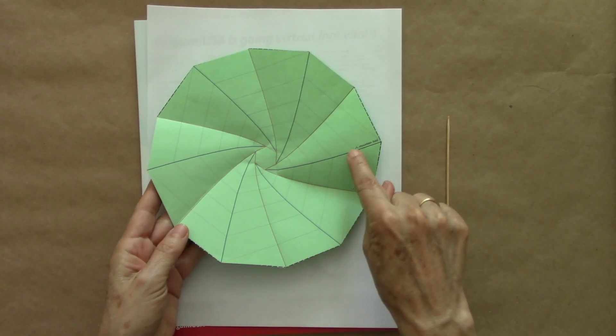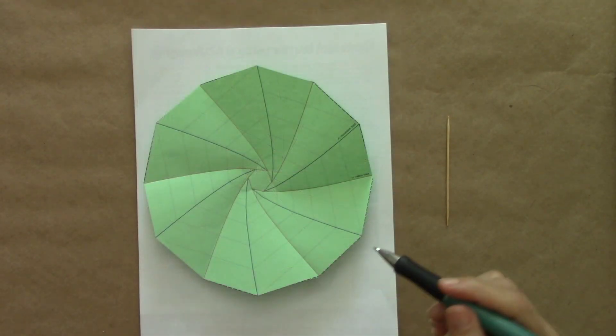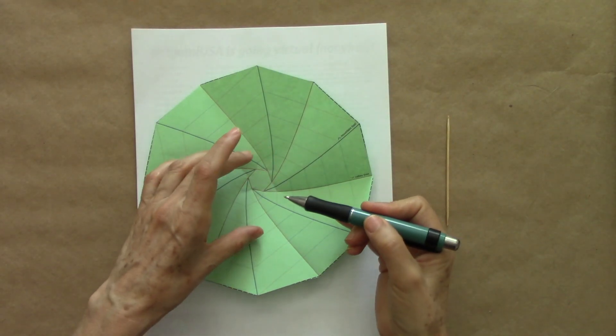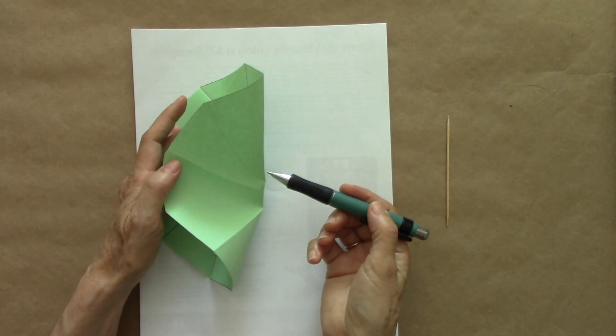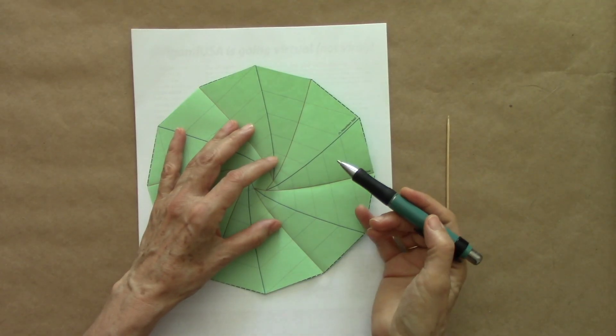Now we want to make these mountain folds. We want to score them too, but since they are mountain on this side, we are going to have to turn the paper over and score on the other side.